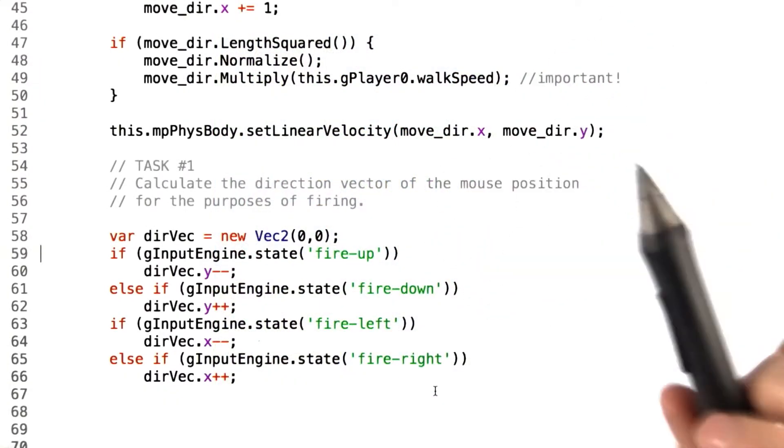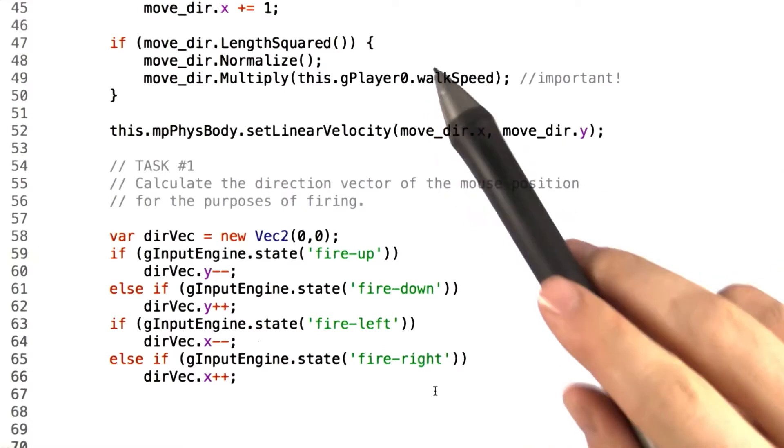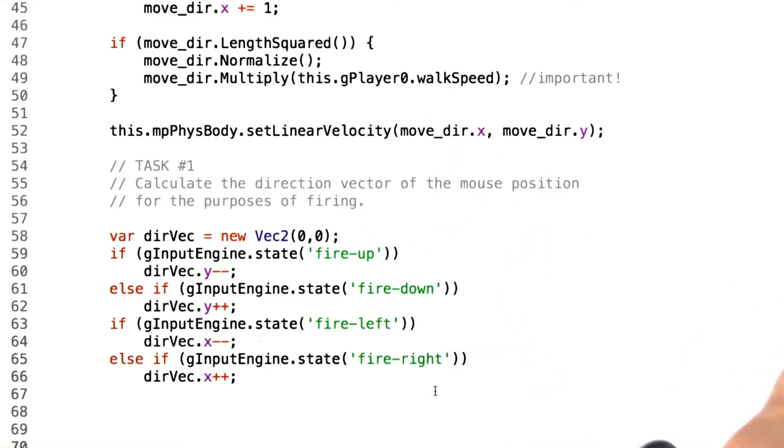We started out the unit talking about how important it was to make sure that every player had a fair experience. But an issue is that mouse players with the current code can actually fire in more directions than keyboard players.